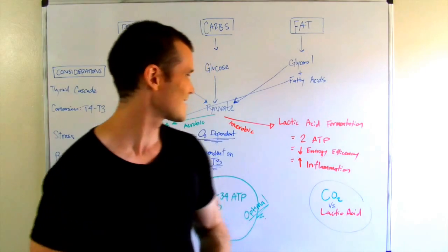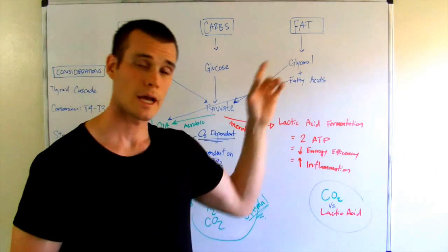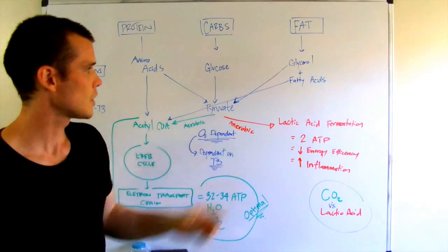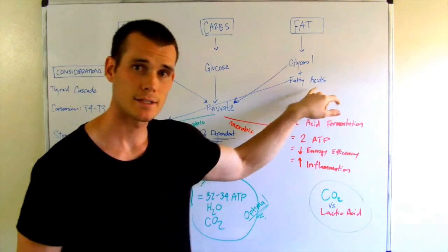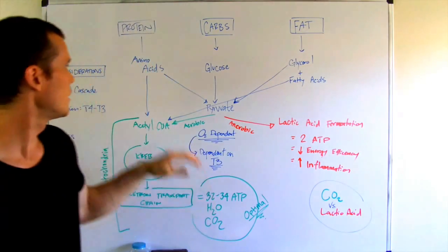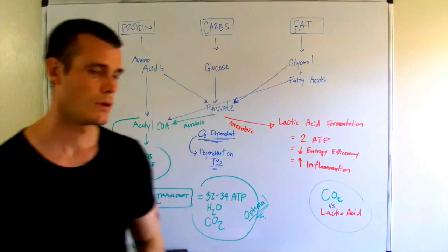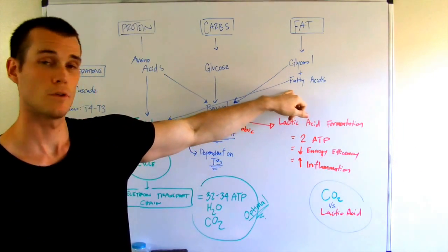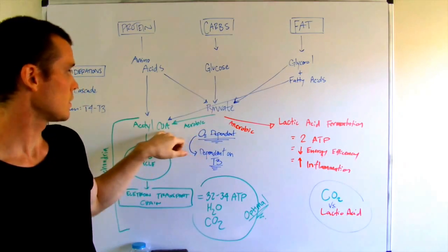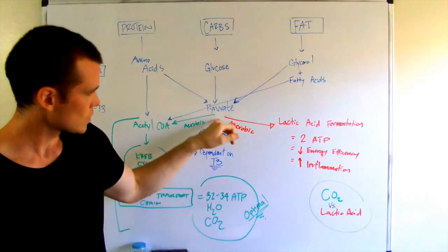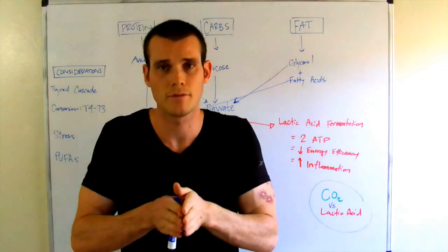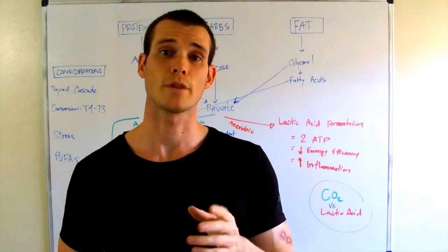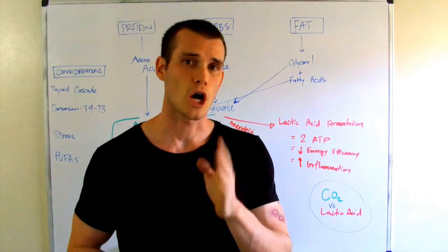Now again, this is all happening at the cell in the cytoplasm. And then, before we touch on this, you'll see that fatty acids and to a lesser degree amino acids will actually also convert and leave us with acetyl-CoA, but I'll get to that. So once we're at pyruvate, what we have is we have a fork in the road. At that fork in the road, everything is oxygen dependent.